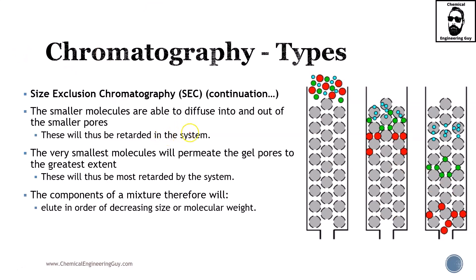The smaller molecules are able to diffuse into and out of the small pores, as stated here. These will thus be retarded in the system. The very smallest molecules will permeate the gel pores to the greatest extent. This will thus be most retarded by the system. The components of a mixture therefore will elute in order of decreasing size of molecules and weight.